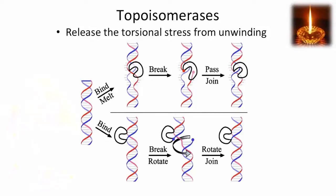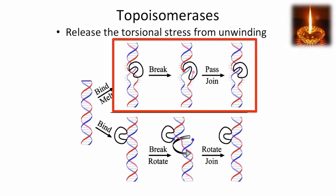There are two strategies that topoisomerases use to do this. One is to break one of the strands of DNA, to pass the intact strand through the breakpoint, and then to reseal the strand.